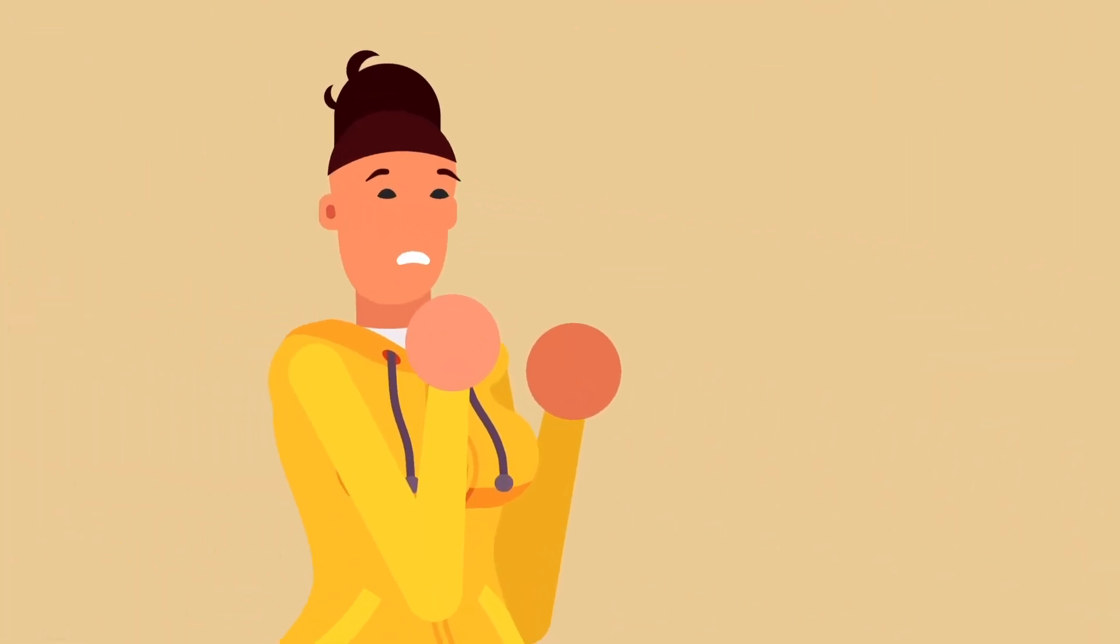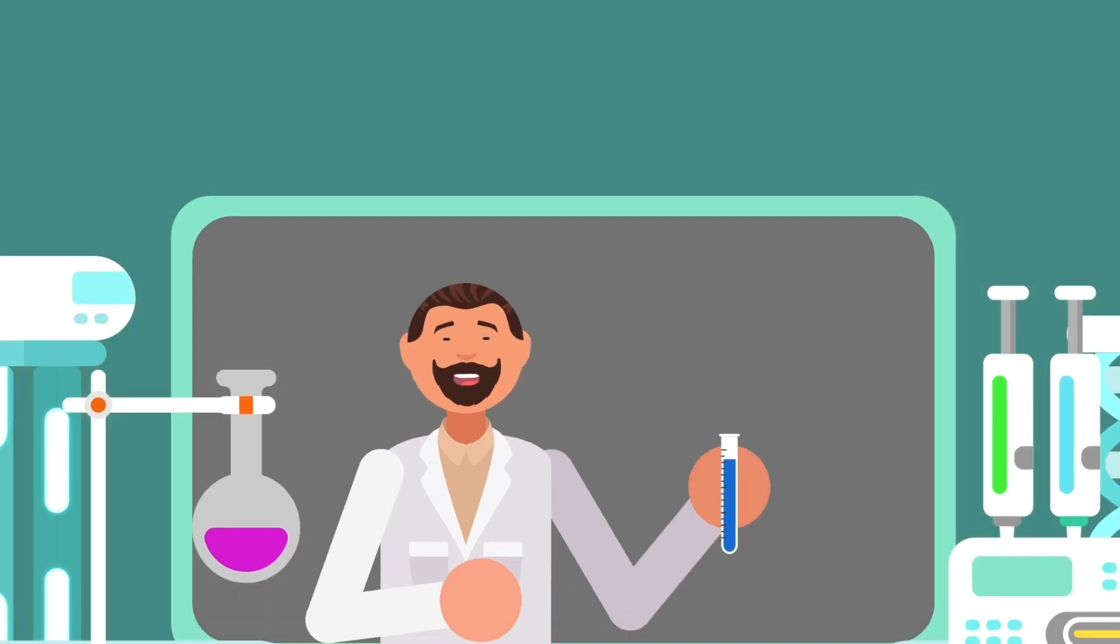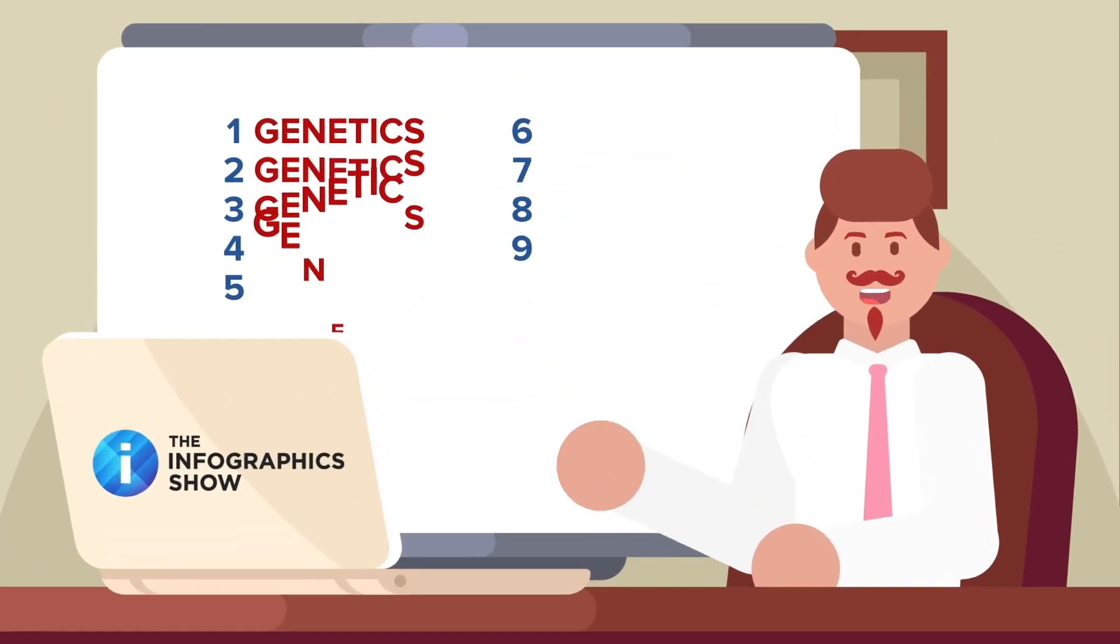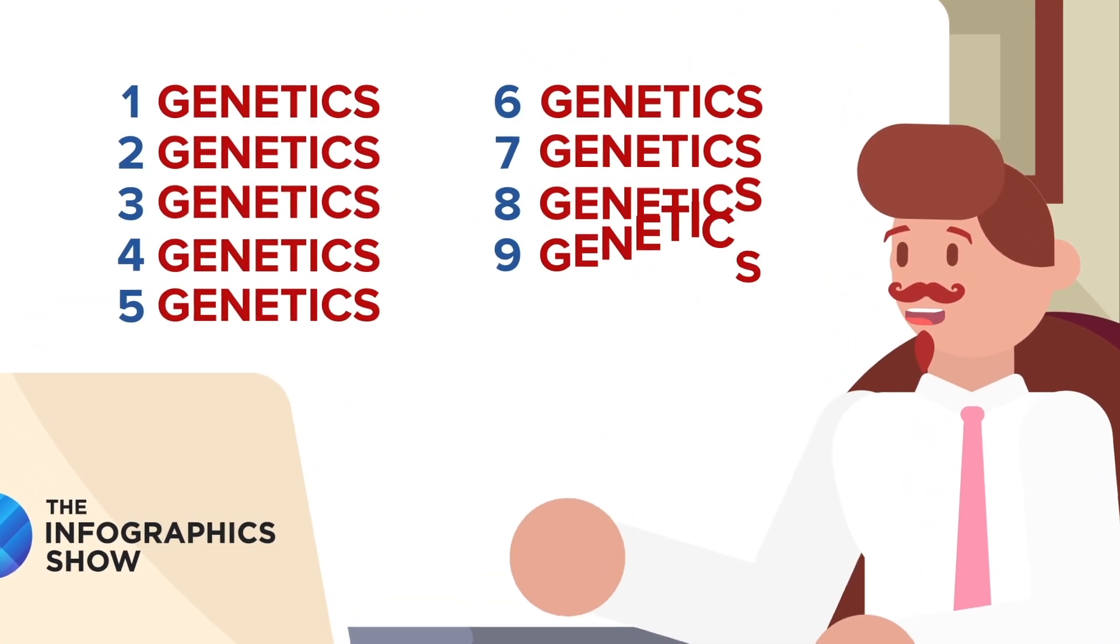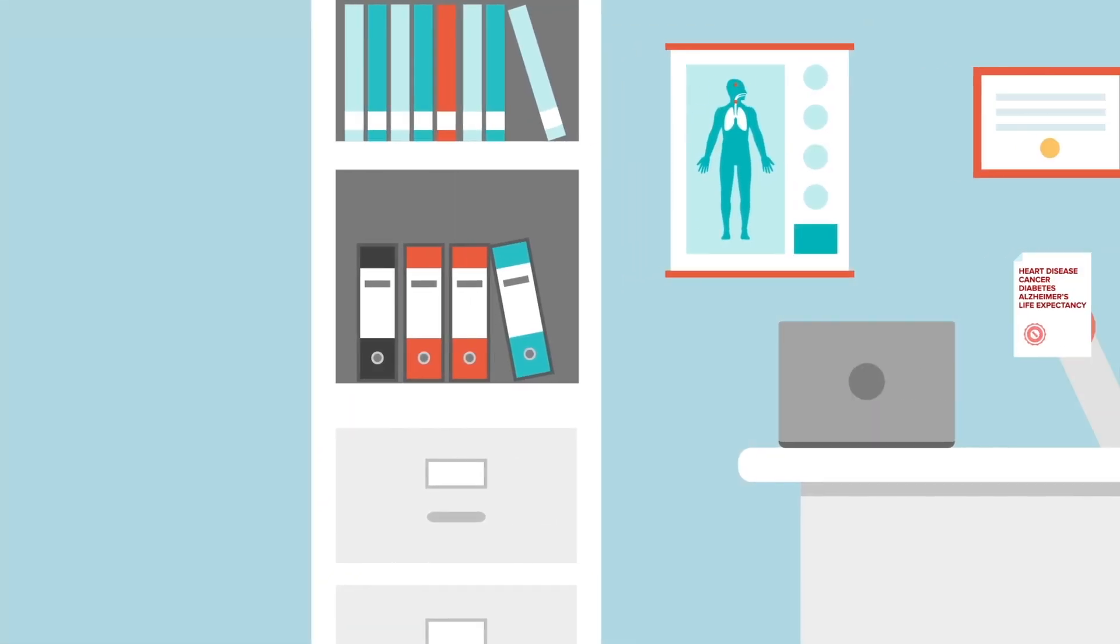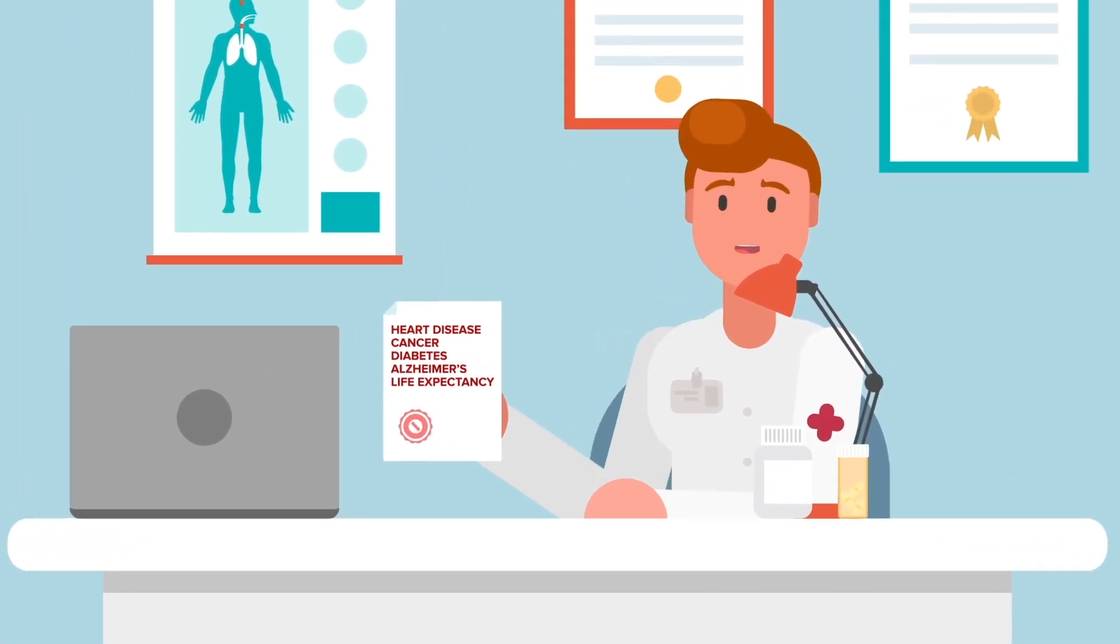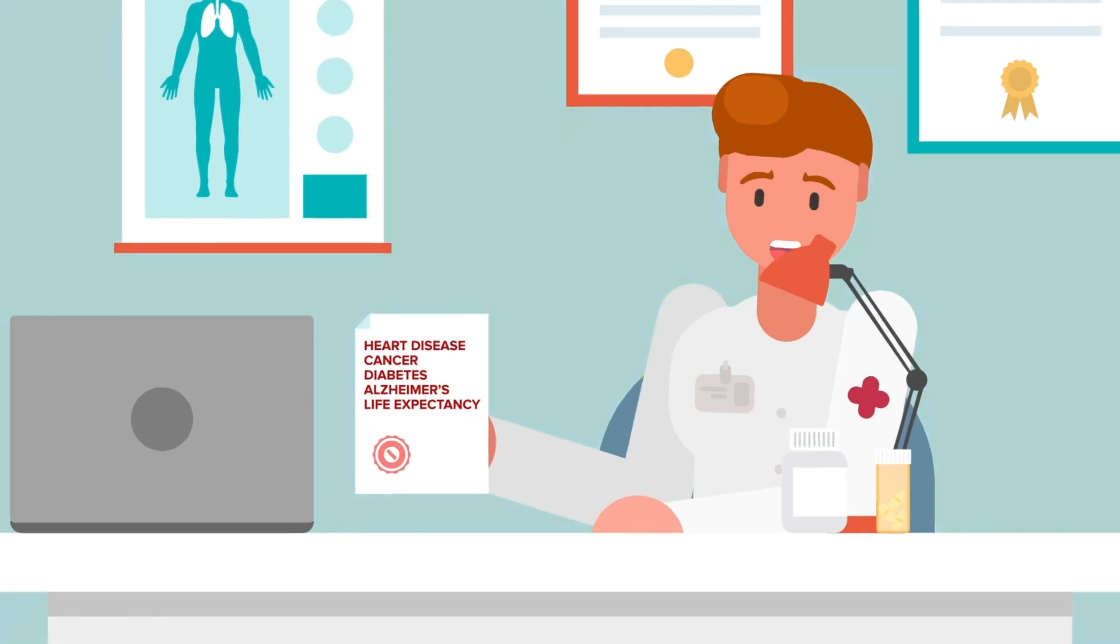Genetics is another big factor in your life expectancy. Nine of the ten leading causes of death in the US currently are directly linked to genetics. If you have a family history of heart disease, cancer, diabetes, Alzheimer's, or other hereditary diseases, your life expectancy might be lower than average.